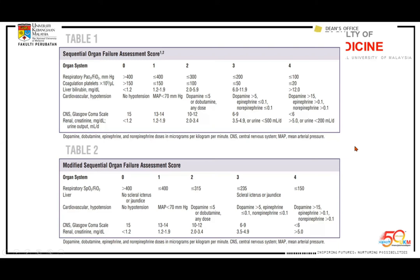Let me introduce the Modified SOFA score — the Modified Sequential Organ Dysfunction score. It consists of only five criteria and five organs, with a similar scoring system. However, it only requires four clinical parameters and one laboratory parameter, which are easily available in any setting.